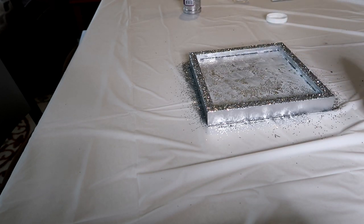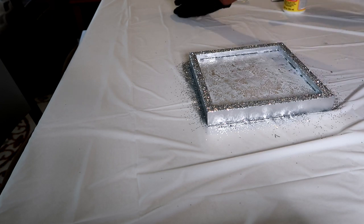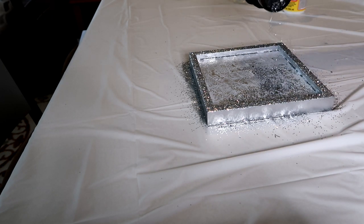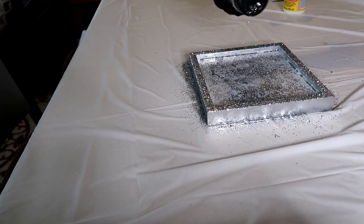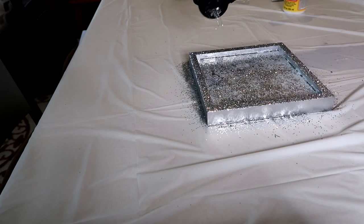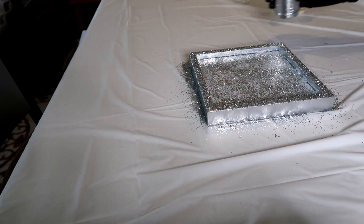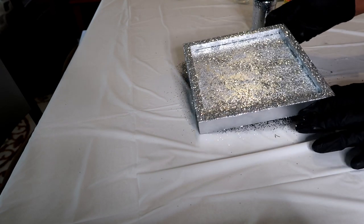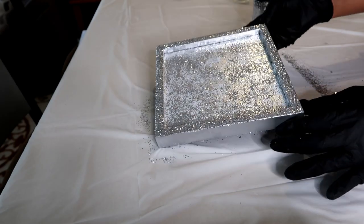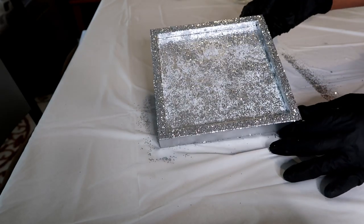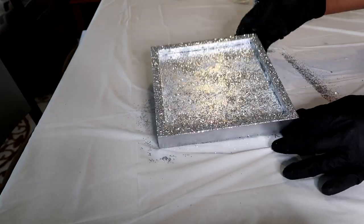All right, now we're done with that and we can add a little bit of the glitter, just sprinkle it as much as you want. That will dry clear. You'll just have a silver backing with some glitter on top.